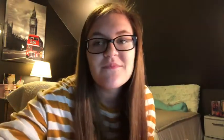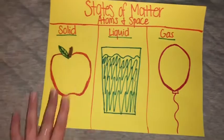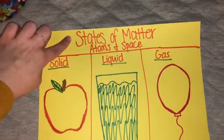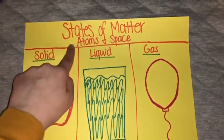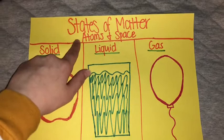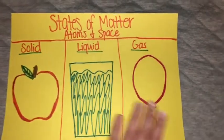Now I'm going to move over and show you a representation of the atoms in space within each state of matter. I'm going to do that by using a diagram and placing beads on it. So we're going to move on to that now.